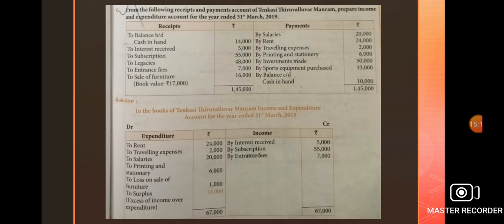Do you know the meaning of income and expenditure account? The income and expenditure account is prepared to ascertain the excess of revenue income over revenue expenditure — that is, surplus — or excess of revenue expenditure over revenue income — that is, deficit. It shows the net result of the entity's overall activities for a particular accounting year.